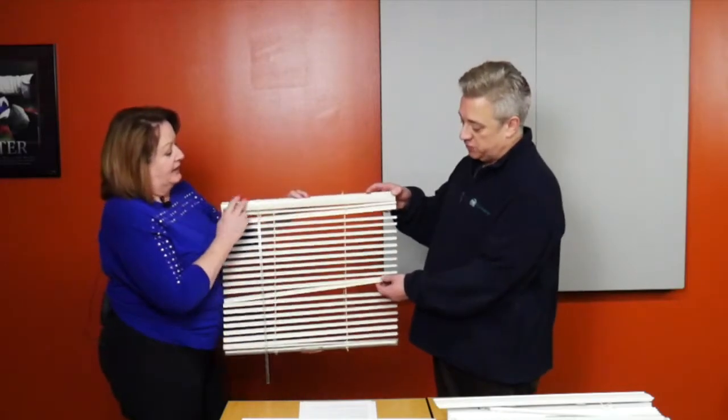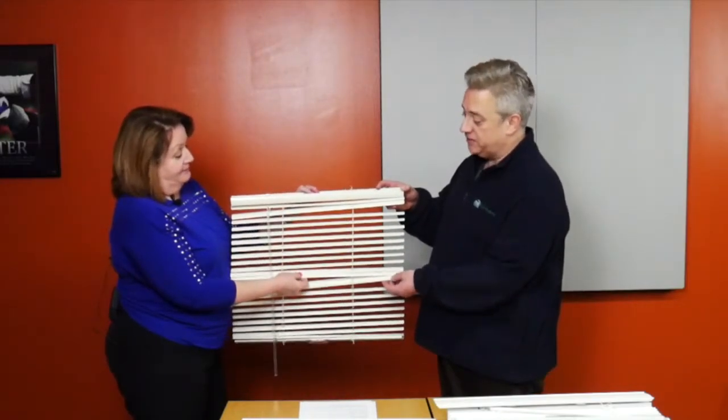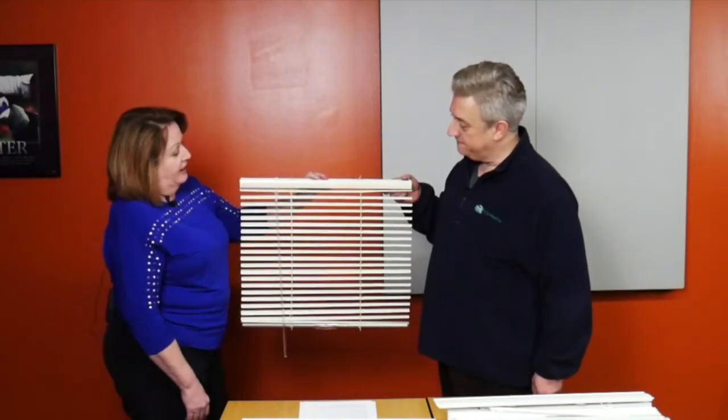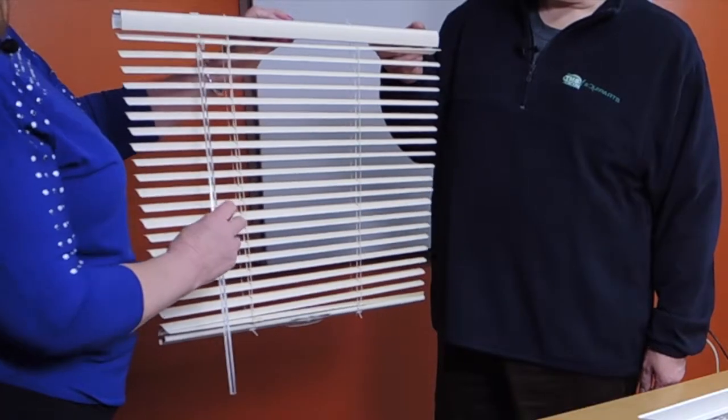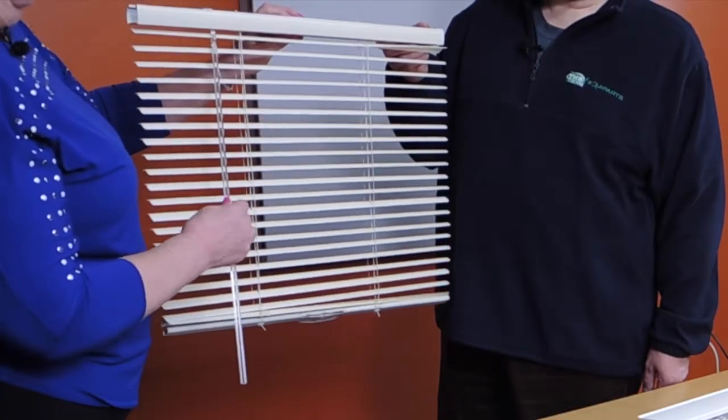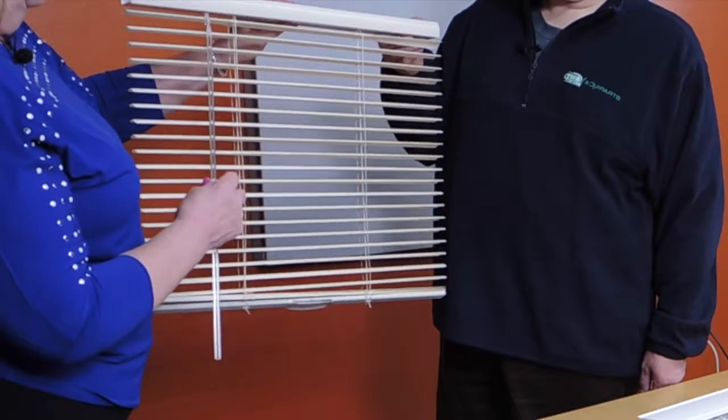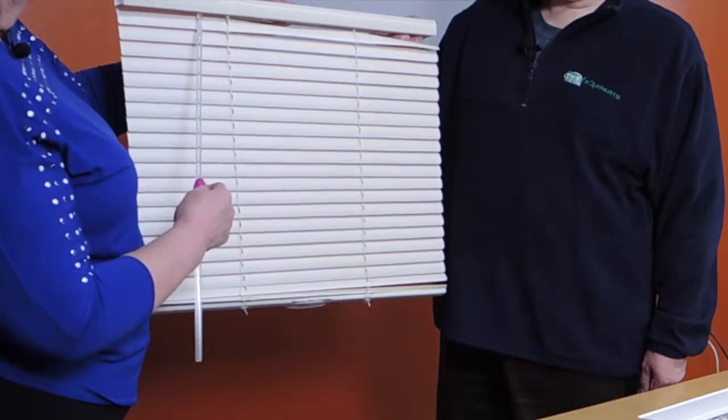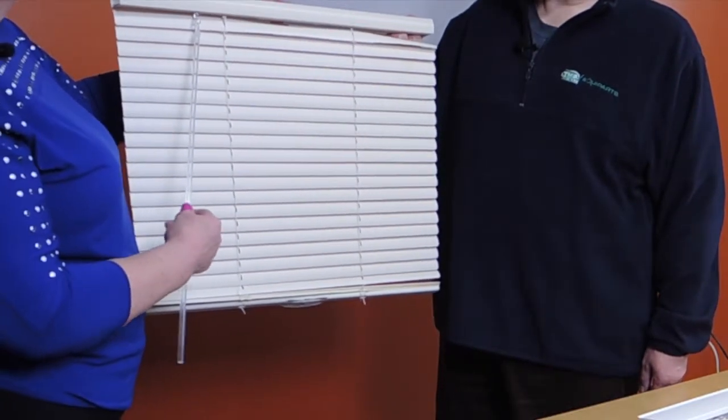But in the aluminum we have 30 to 40 different colors, so if you really want to match something nicely you can. I see. Now when you say this is a one inch blind, that refers to the width of the slat. That is most popular now. As far as controls, most of these come with a wand that you're going to tilt and open and close the blind.